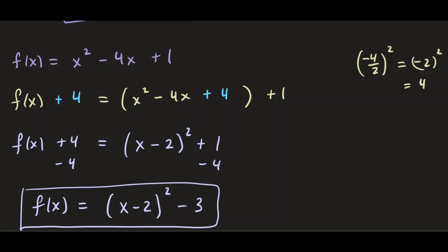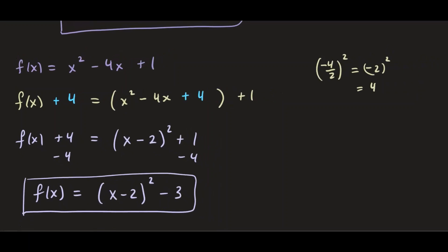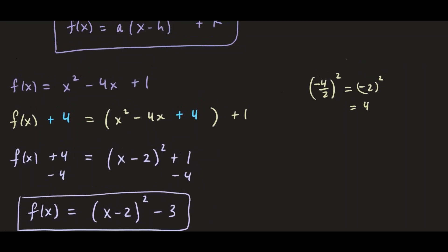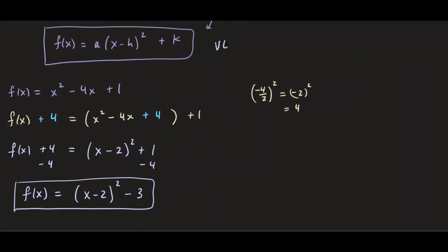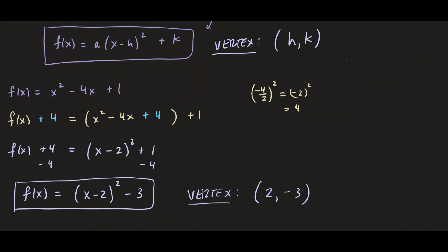Some textbooks also call this the vertex form, because once it is in this form you can write down the vertex. From the standard form, the vertex of this quadratic is (h, k). So the vertex here has x-coordinate 2 and y-coordinate -3, meaning h = 2 and k = -3. That is the vertex for this quadratic.